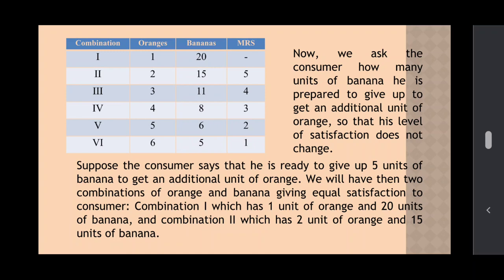Combination first mein one orange plus twenty bananas hai. Combination second mein ek aur orange ke liye consumer paanch bananas dene ke liye taiyar ho jaata hai. Paanch units of banana dene se use dis-utility milti hai, magar ek orange ke zyada hone se use utility bhi milti hai — gain bhi milta hai. Toh dis-utility, utility ke barabar ho jaati hai, aur consumer ko combination first mein jo satisfaction mila hai, wahi same equal satisfaction use combination second mein bhi milta hai.